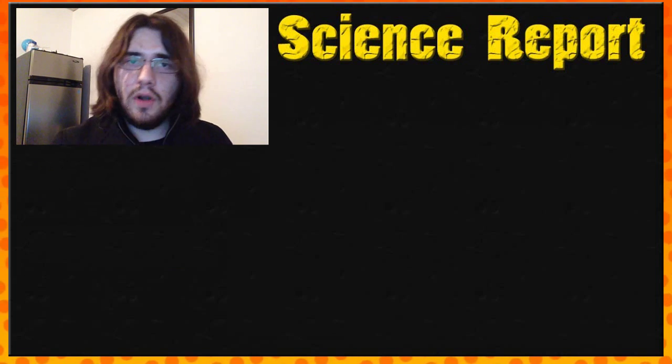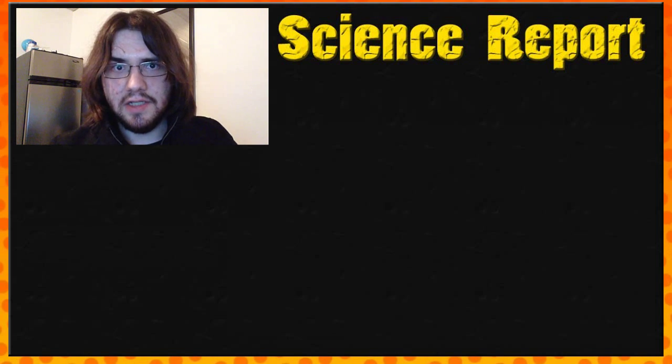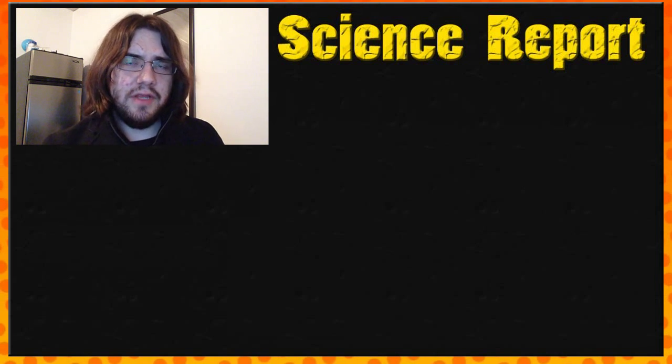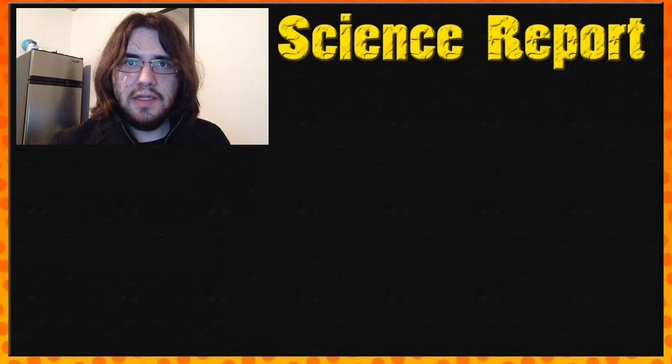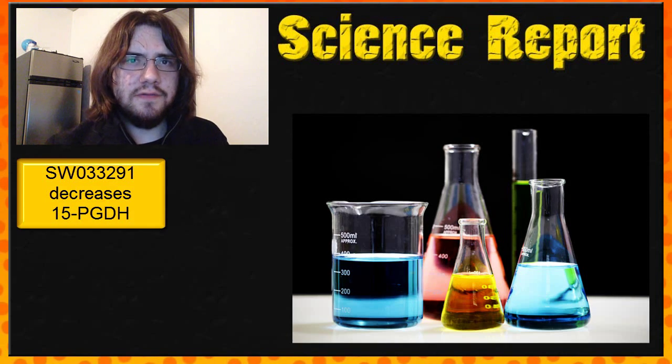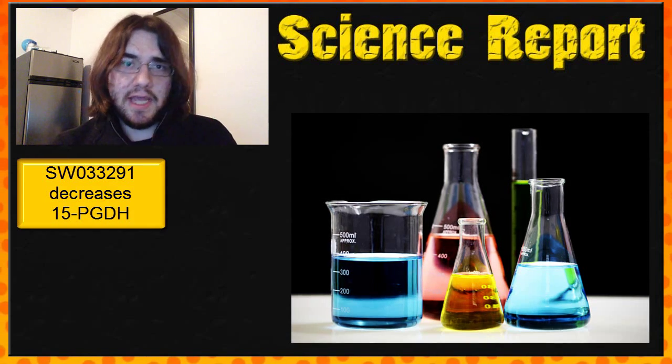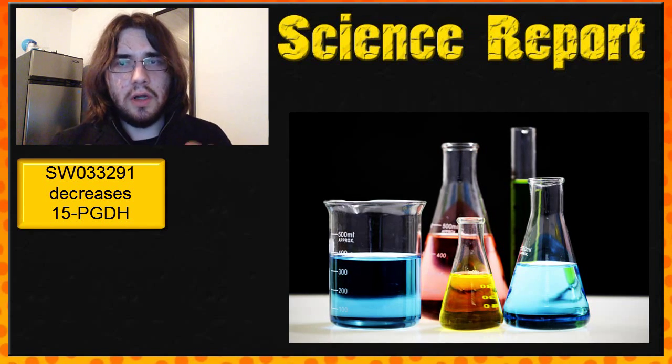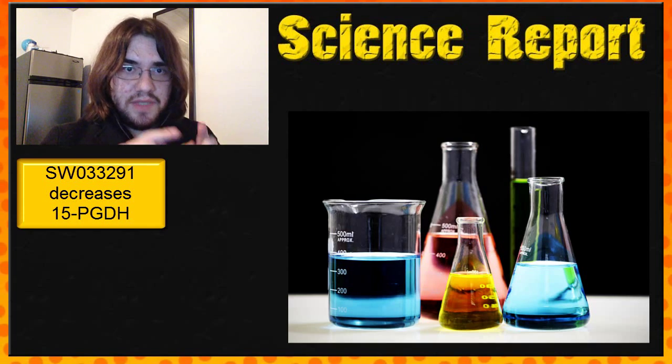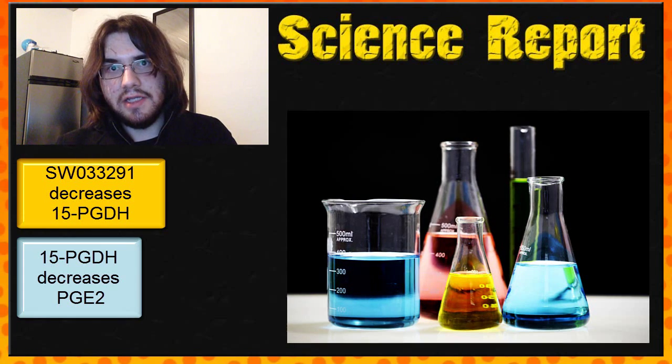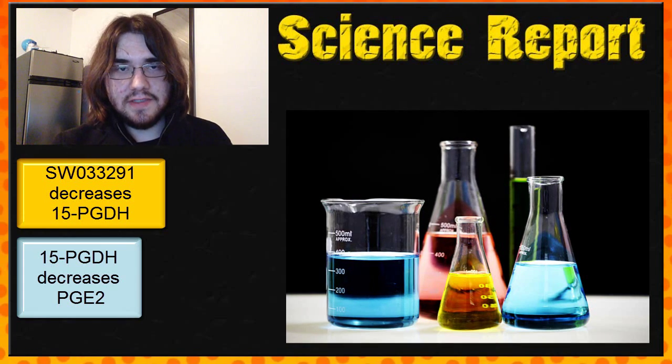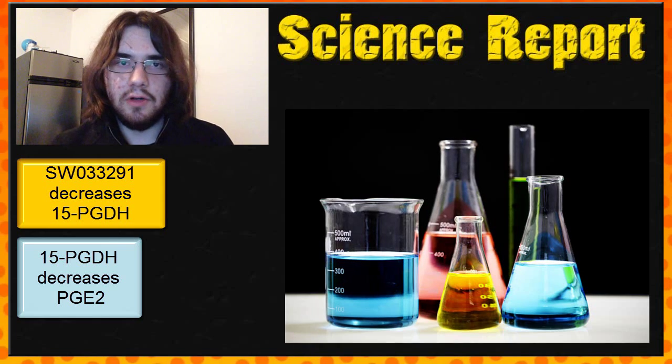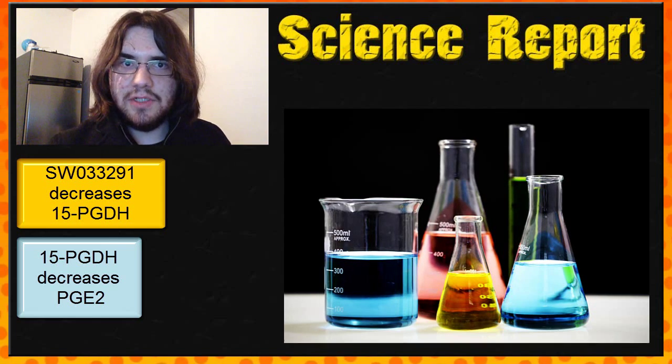To get a bit more into what their drug actually does, the SW033291 drug decreases the amount of another chemical in the body called 15-PGDH. It's this chemical that is inhibiting or decreasing the amount of PGE2 in the body, which is the one that actually causes quicker regeneration or healing of certain damaged tissues.